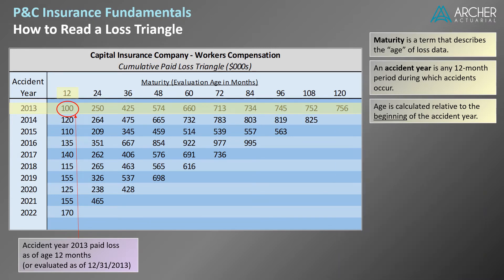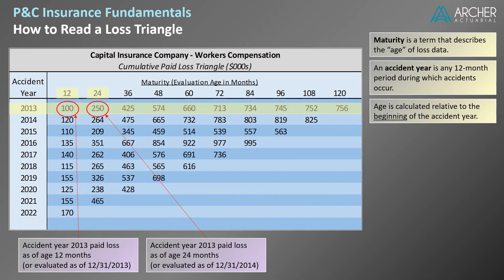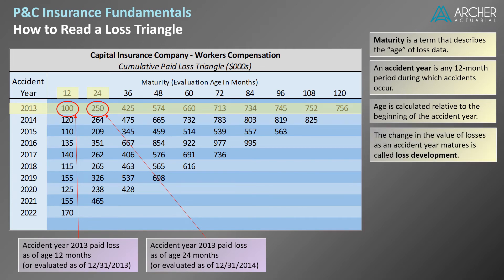Moving one cell to the right, cumulative paid losses for accident year 2013 are seen to equal $250,000 at age 24 months. It's important to recognize that this amount, as well as all amounts in the same row, only include claims with accident dates in 2013. Whereas paid losses equaled $100,000 after 12 months, this amount increased to $250,000 after 24 months. The change in value of losses as an accident year matures is called loss development — in this example specifically, paid loss development.